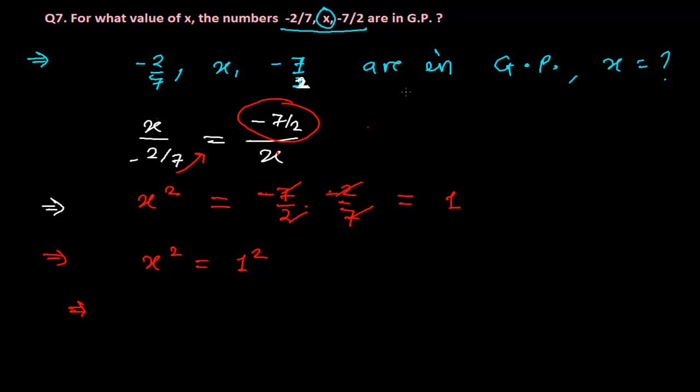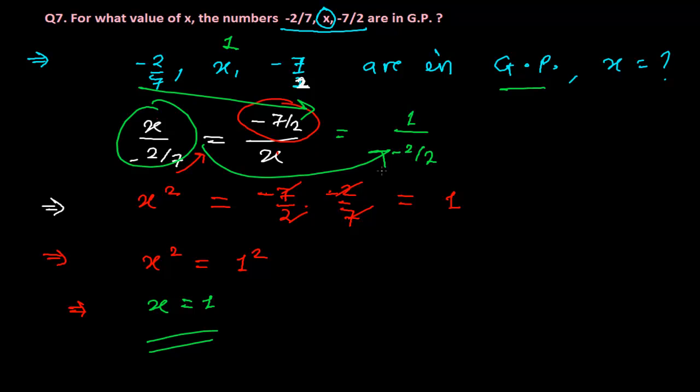Therefore we get the value of x equals to 1. So if x equals to 1, then this will be in geometric progression, because everywhere we'll get the same constant r. You just put it here.